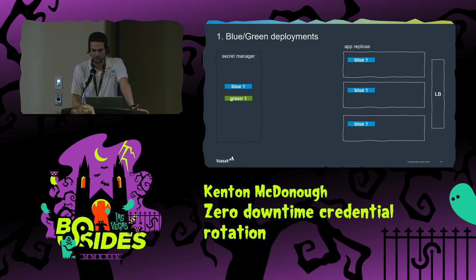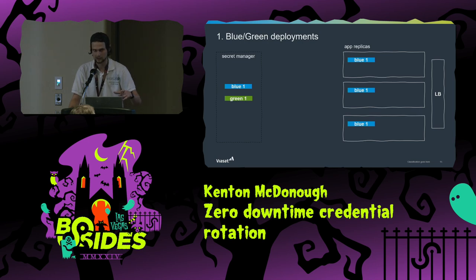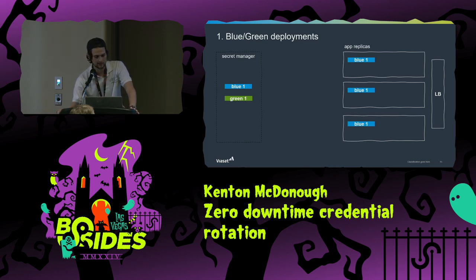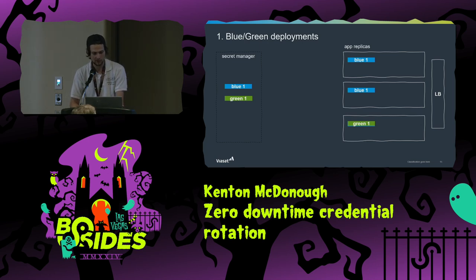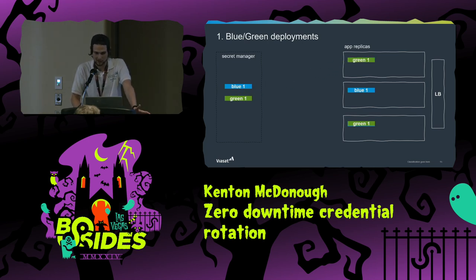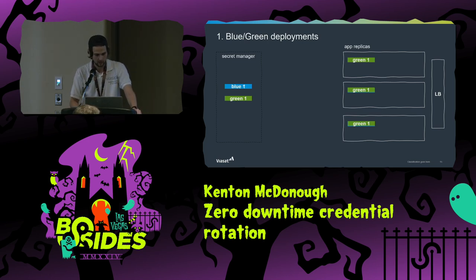Strategy number one is blue-green deployment. In the secret manager you have two credentials — blue one and green one — which are identical and valid for the same thing. Three app replicas all use blue one behind a load balancer. When I want to rotate blue, I start by pushing out green to one replica first and make sure nothing breaks. If it didn't work, I still have two replicas running. I push green to the second and third replica. Blue one is now gone — nobody is using it. Now I can change blue one to blue two.